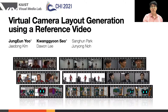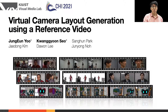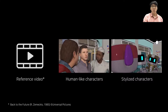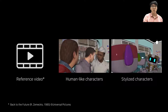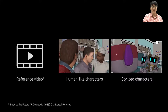We are PhD students at Visual Media Lab, KAIST. We are here to present our virtual camera layout generation using a reference video. We propose a method that generates a virtual camera layout of a 3D animation scene by following the cinematic intention of a reference video.